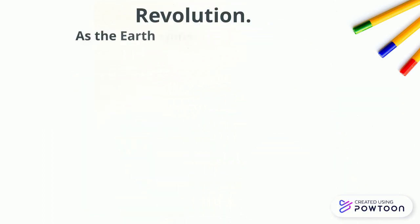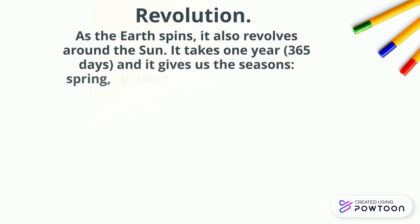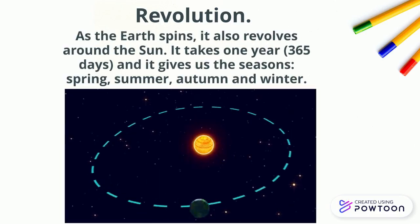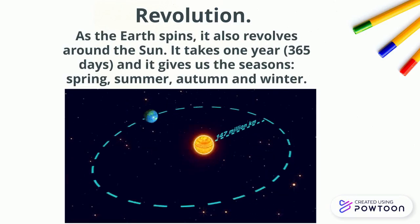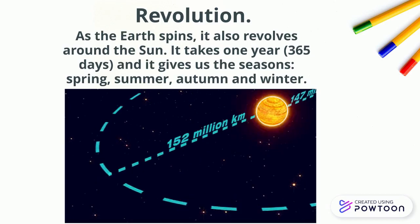The second one is revolution. As the Earth spins, it also revolves around the Sun. It takes one year, 365 days, and it gives us the seasons: spring, summer, autumn and winter. In this image, you can see that when we are near the Sun it's summer, and when we are far away from the Sun, it's winter.